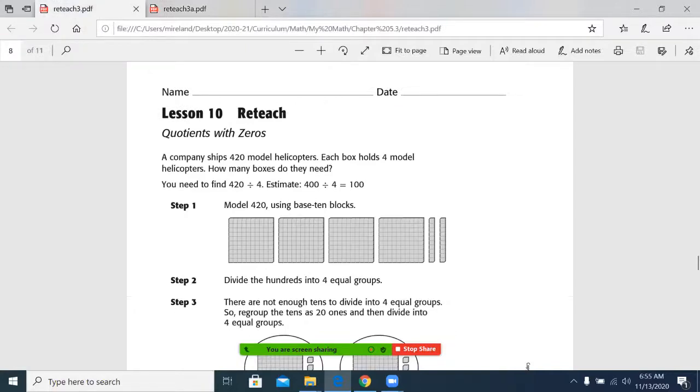Alright, so today's edition, quotients with zeros. You might get an answer if something goes into something 102 times. And that's okay. So let's start with this example here.